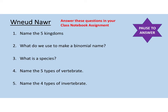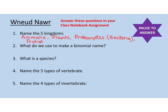Okay, so let's go through the answers now. Number one, name the five kingdoms. So that's animalia, plants, prokaryotes — in brackets, bacteria — protists, and fungi. So the five kingdoms are animalia, plants, prokaryotes, protists, and fungi.